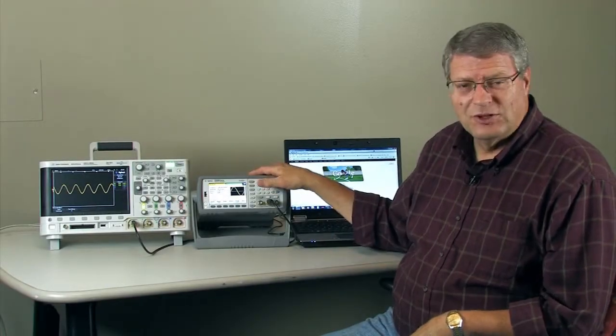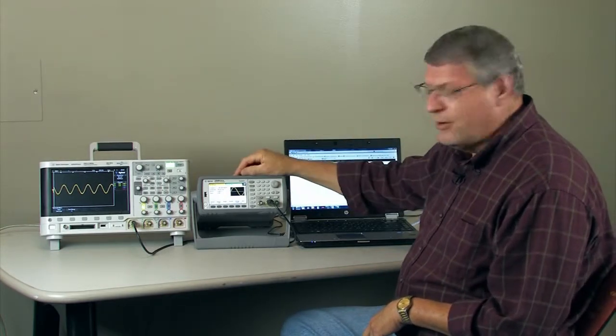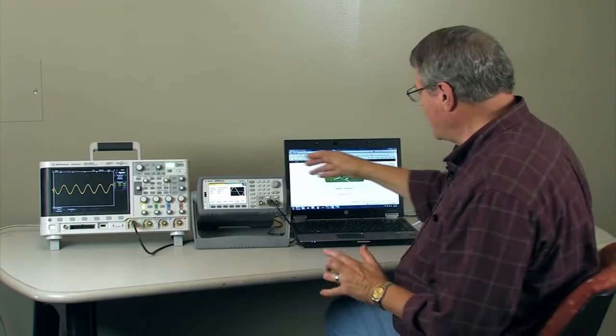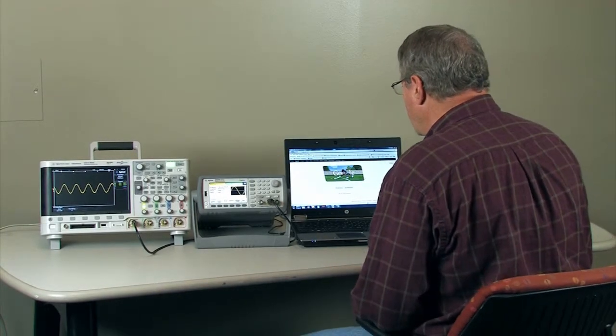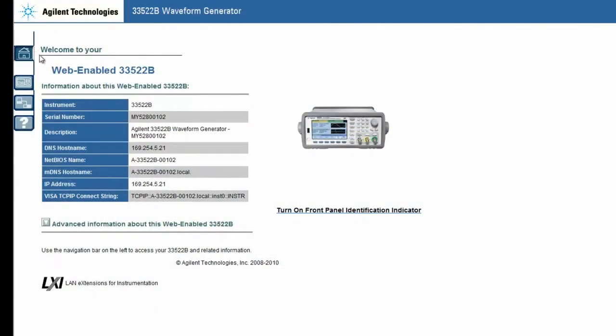Now I have my 33500B generator connected directly to my laptop via a LAN cable. Nothing going on in between, just the two directly coupled. The 33500B has a unique IP address, which I've gotten. I'm going to go ahead and put that into my web browser, and when I do, up pops this screen, which is a welcome screen for the 33522B. So now I'm connected to the generator, and I'm talking to it.